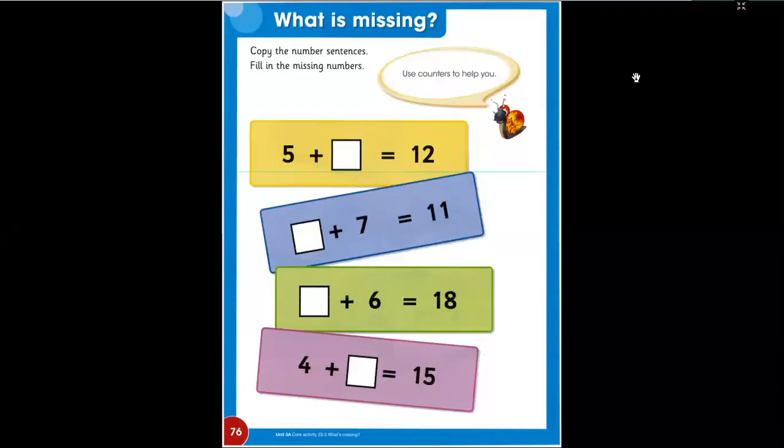We are on page number 76. The name of our topic is, what is missing? There are different numbers and sentences given in the page, and there is a digit missing, a number missing to complete our number sentences. So we are going to find out that missing number to complete our number sentences.